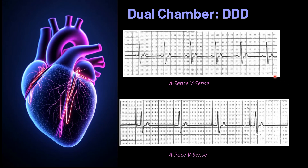ECG examples for DDD mode: In the first ECG, the atrium is sensed and the ventricle is sensed — there is intrinsic activity so the pacemaker does not need to fire. In the second ECG, there is no atrial activity so the atrium is paced, producing a pacing spike followed by a P wave. After that, the ventricle is sensed, so the QRS complex is intrinsic from the heart itself.